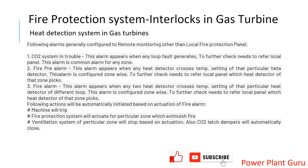Now let us understand the different alarms and alerts that notify the user of a problem in the fire system. The first alarm is 'CO2 system trouble,' which indicates any fault in the system — electronic faults, cable-related faults, or sensor-related faults. When this appears at Mark 6, you need to check the fire protection panel — for example, a Sanco panel — where a description of the alarm is available so you can drill down to find the root cause.